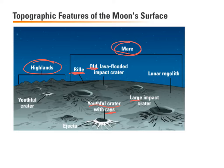We also talk a little bit about lunar regolith, which is going to be kind of like the smaller rocks, the dust, the clays, and things like that that we can see on the Moon as well.